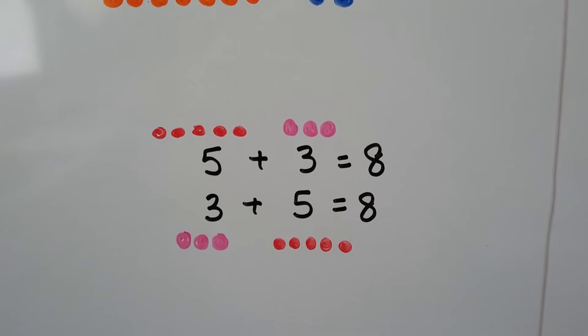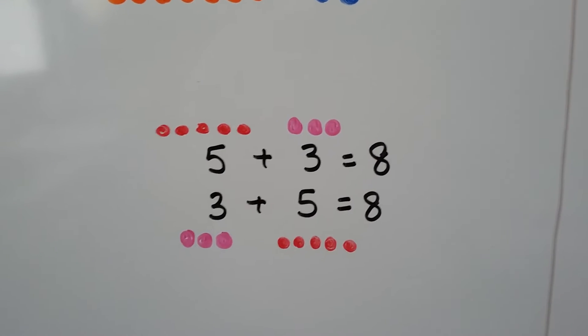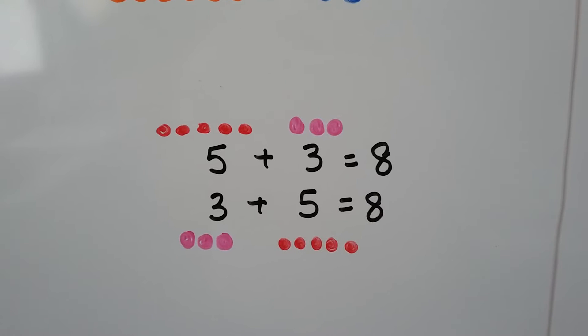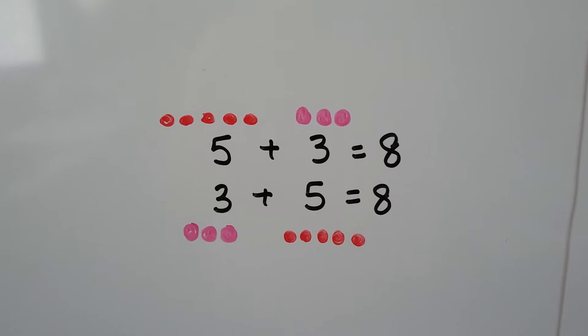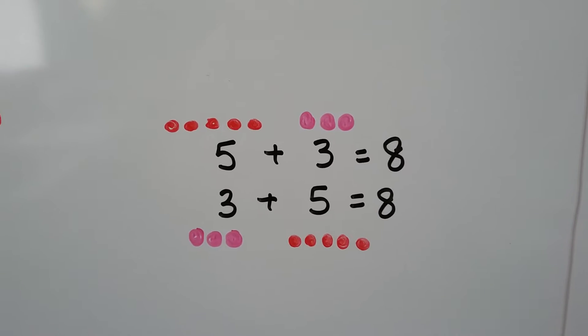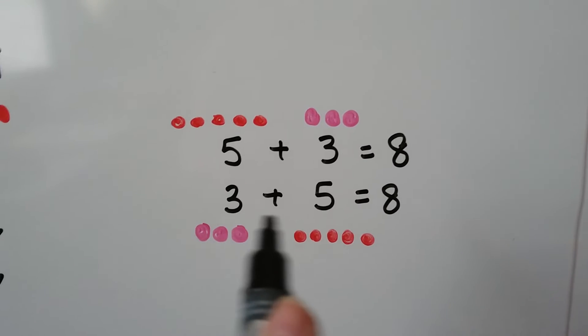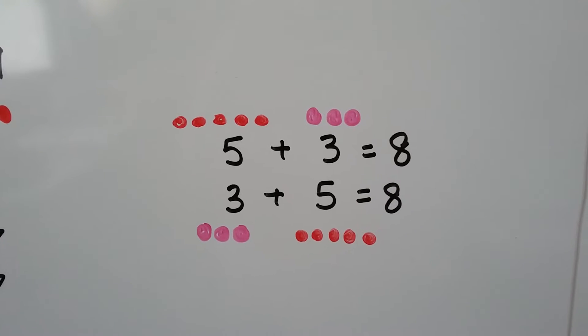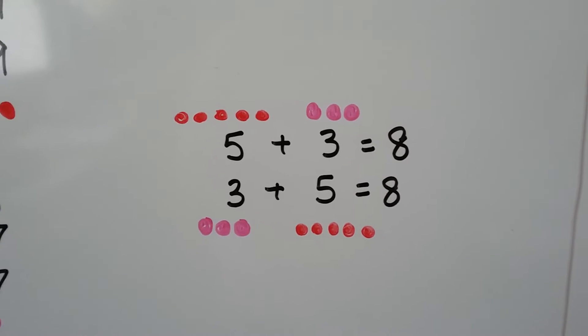Here we have five plus three equals eight, and three plus five equals eight. Even though they switched places, it still equals eight.